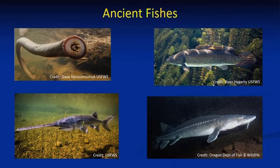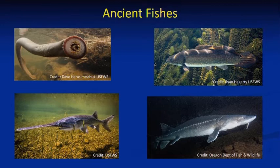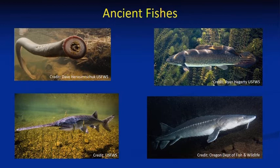Ancient fishes — sometimes called living fossils — have been around for a long time. Their lineages trace back sometimes even before the dinosaurs, and representatives alive today look very similar to those in the fossil record. Examples include the Pacific lamprey, bowfin, paddlefish, and white sturgeon — native species here. These ancient fishes have seen a lot of change, and it's impressive that they're still able to survive and persist during the time of humans.